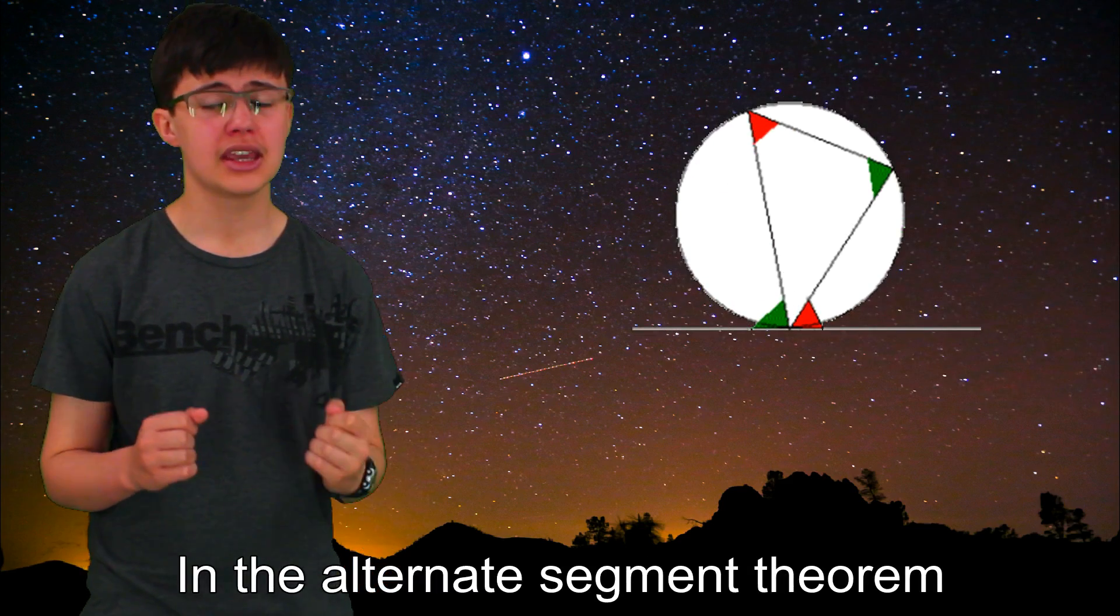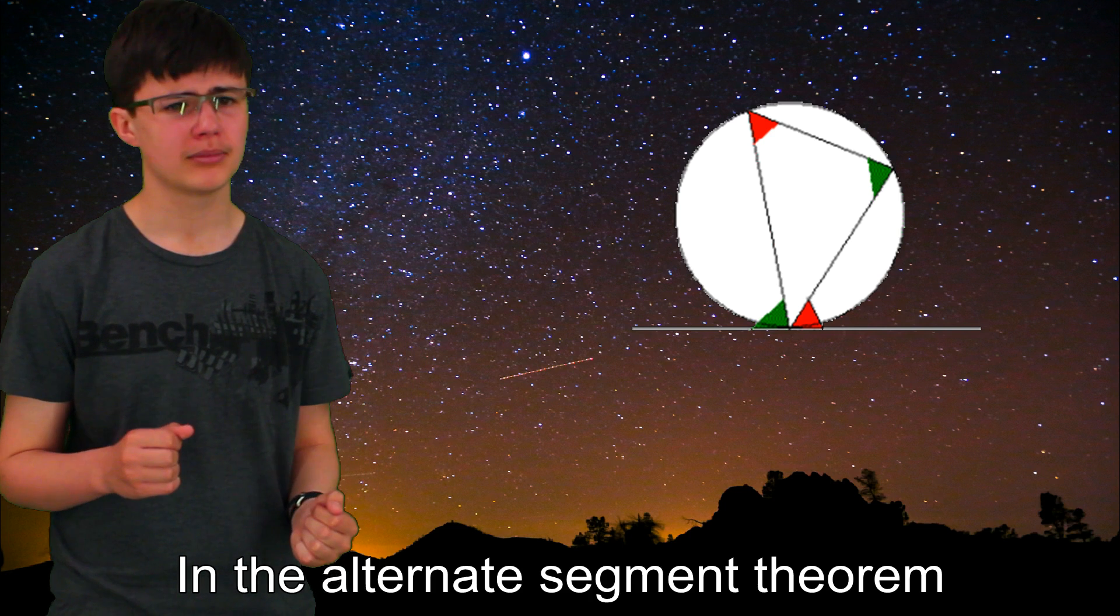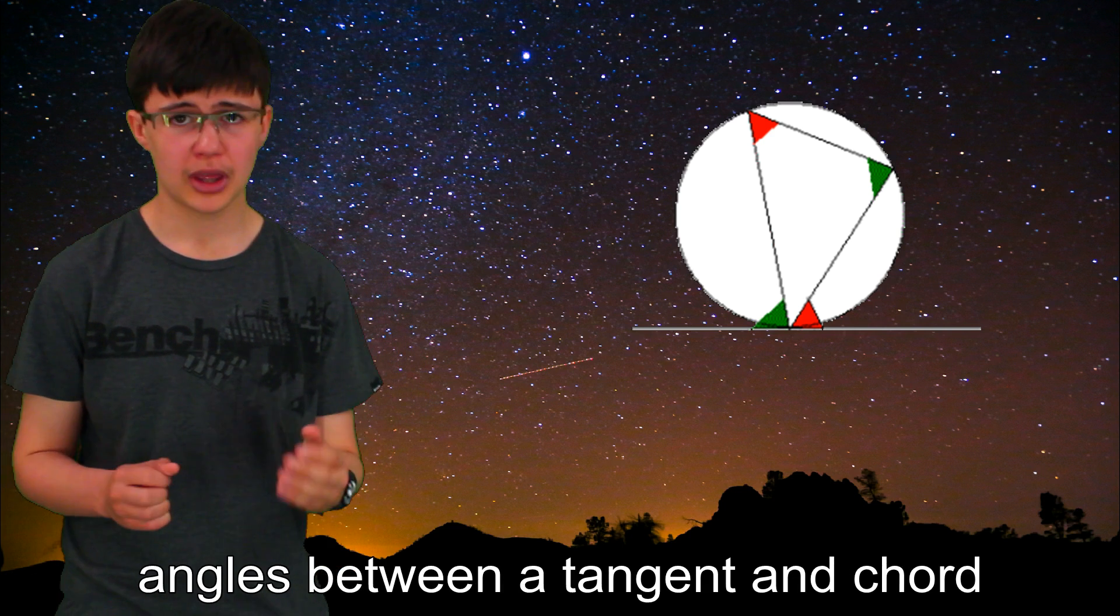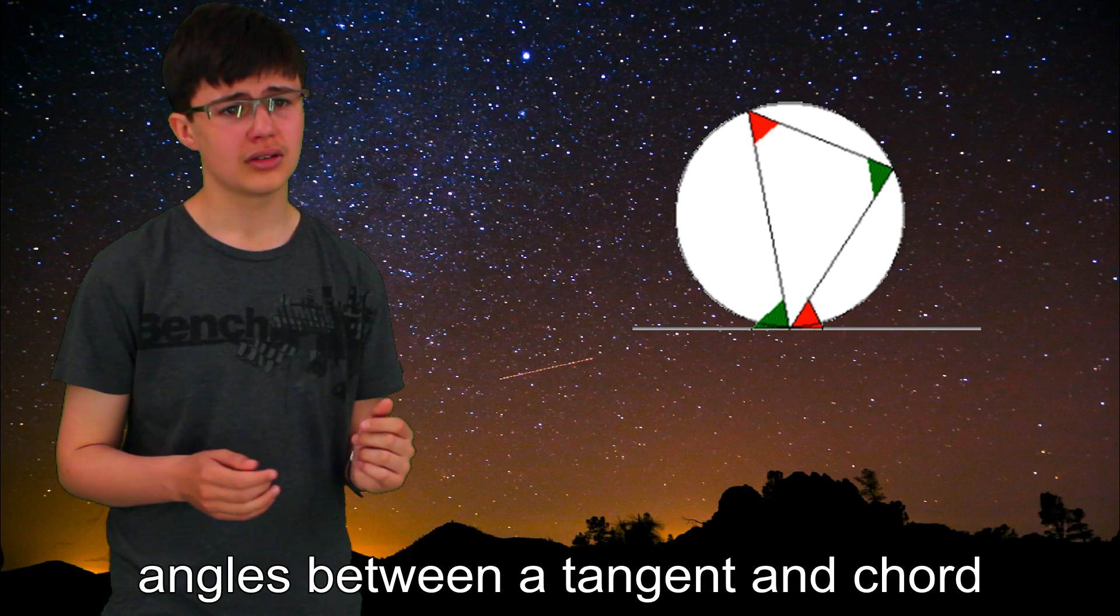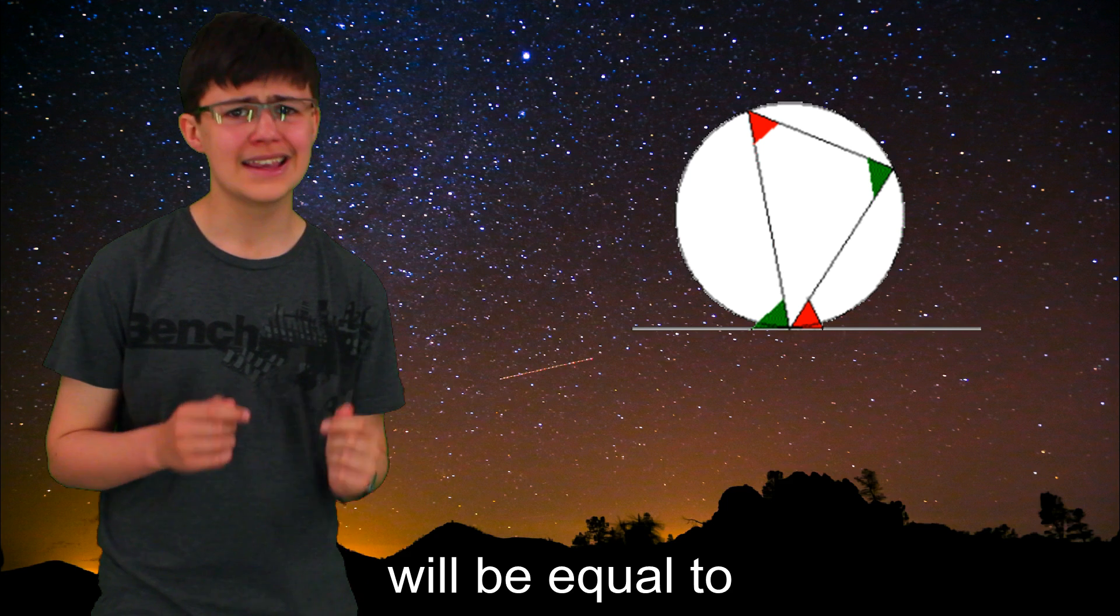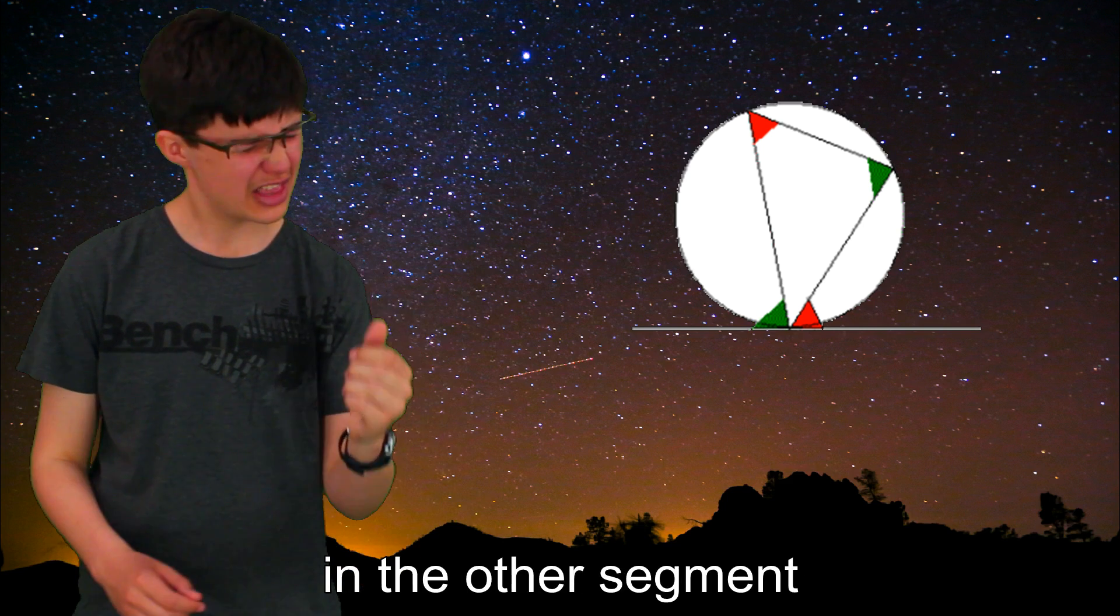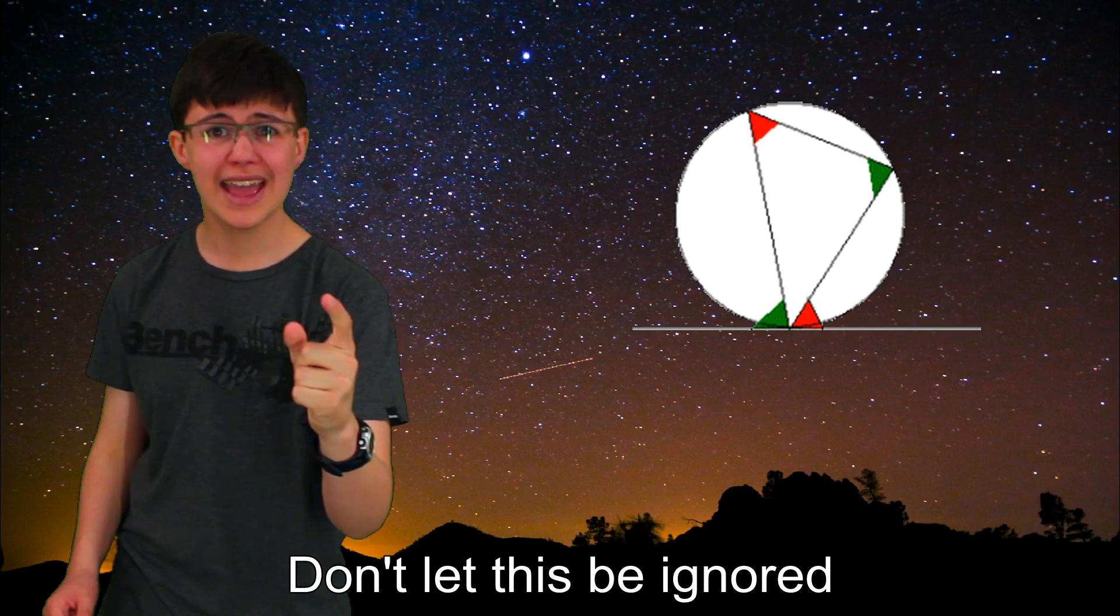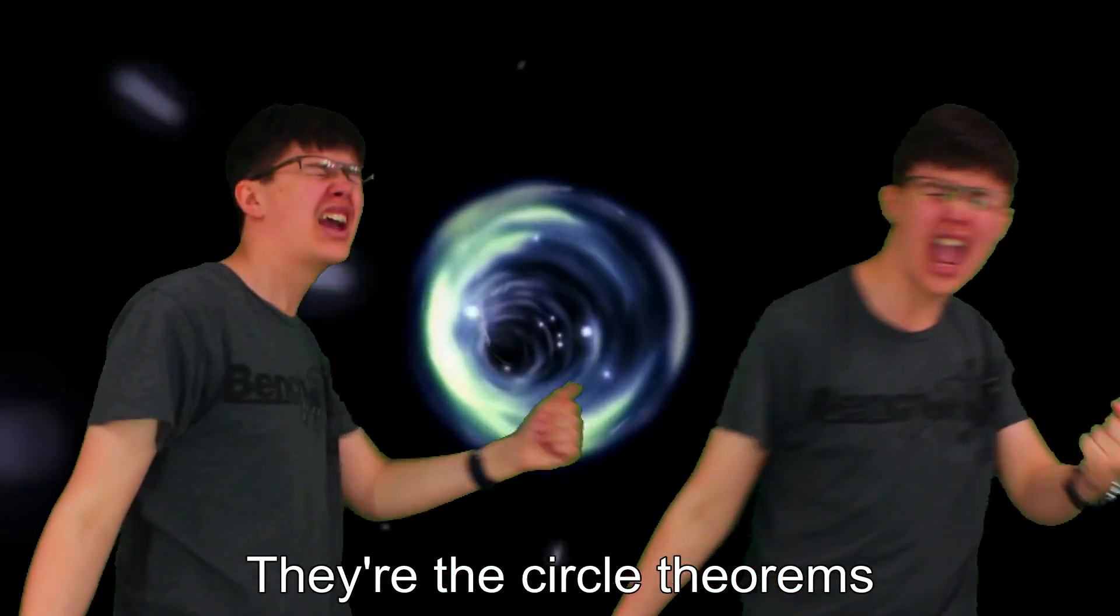In the alternate segment theorem, angles between the tangent and chord will be equal to the one you can view in the other segment. Don't let this be ignored. The circle theorems.